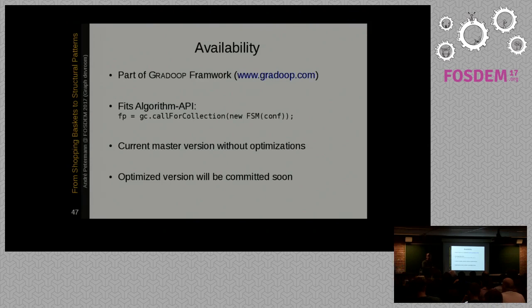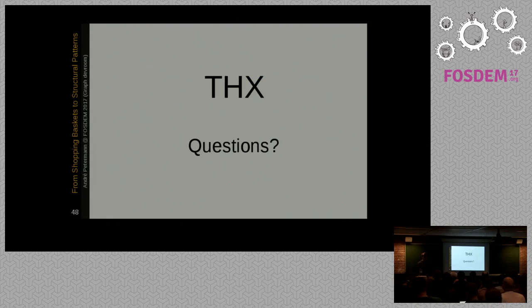And the availability of the... It's part of the Gradoop framework. This distributed framework for graph processing. It fits its algorithm API. The current version you will find in the master branch. It's not optimized. It's still using Java objects and strings and stuff like that. So it's not very efficient. And the optimized version is still a messy research prototype but will be merged to the master soon. Thank you. Thank you. If you have any questions.